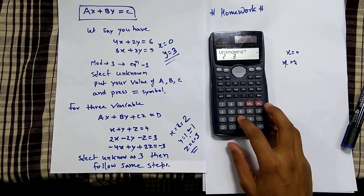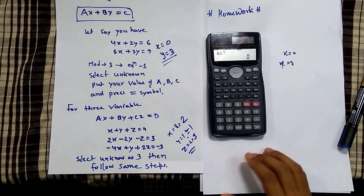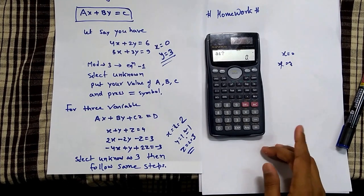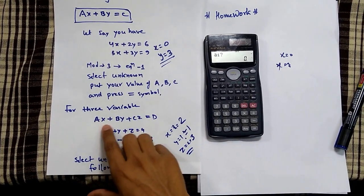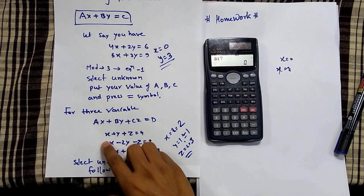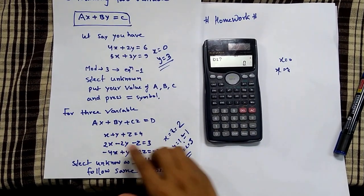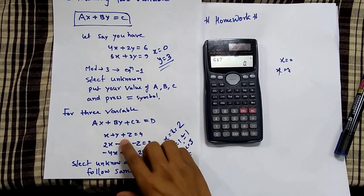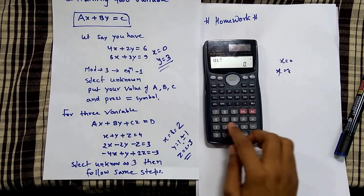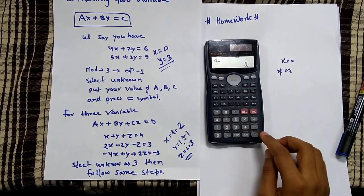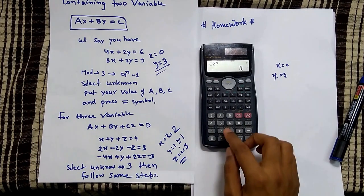Select your unknowns — this time I have 3 unknowns so I'll press 3. It will ask for a1, b1, c1, and d1 values. Comparing with my equation: a1 equals 1, b1 equals 1, c1 equals 1, and d1 equals 4.